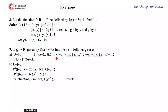To find f⁻¹(6), we need x ∈ Z such that f(x) = 6. Since f(x) = x² + 5, we set x² + 5 = 6, which implies x² = 1, which implies x = ±1. Therefore f⁻¹(6) = {+1, −1}. These are the elements that are mapped to the value 6 in the range.